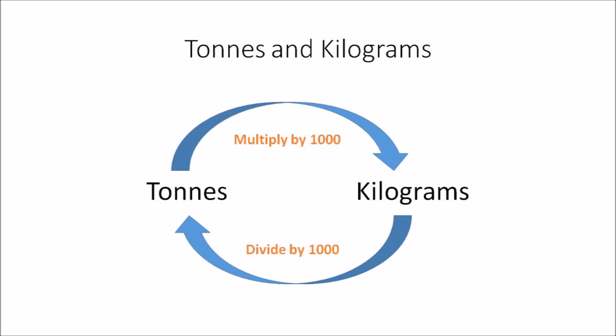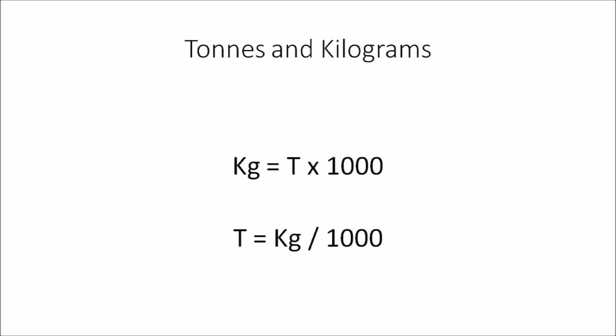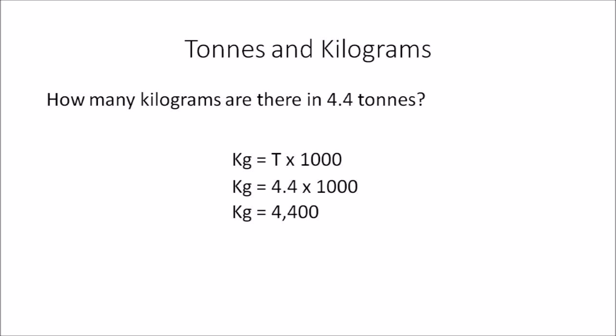And if you have to convert kilograms back to tons, you need to divide the amount you have in kilograms by 1000. So in formula terms: Kg = T × 1000 and T = Kg ÷ 1000. The conversion factor is 1000.